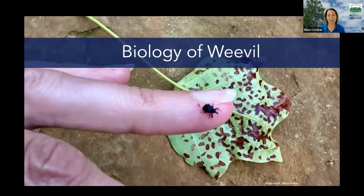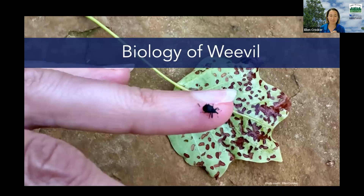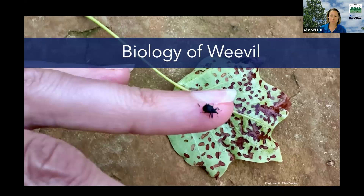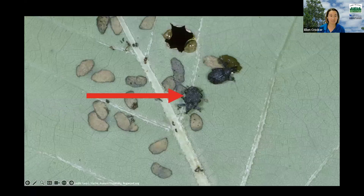First let's look at this weevil — kind of cute if you think weevils are cute. They are small, black or brown in color, and they have this noticeable long snout. I've heard people say they look tick-like, but I think that snout sets them apart. It's a native insect with a single life cycle each year, and typically it's present in small numbers, but you can get bigger outbreaks with more extensive numbers and extensive damage.